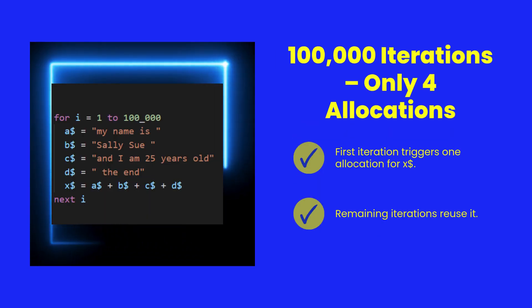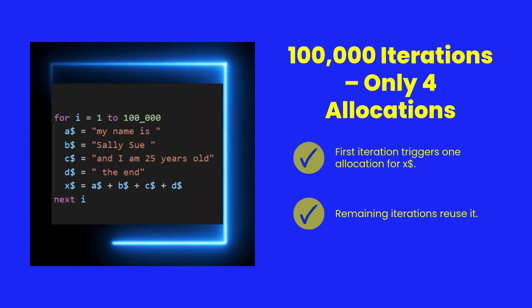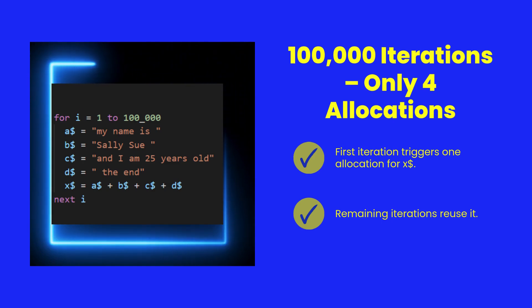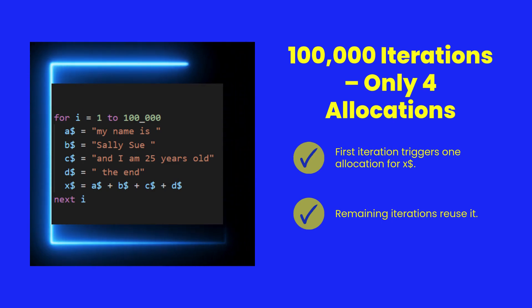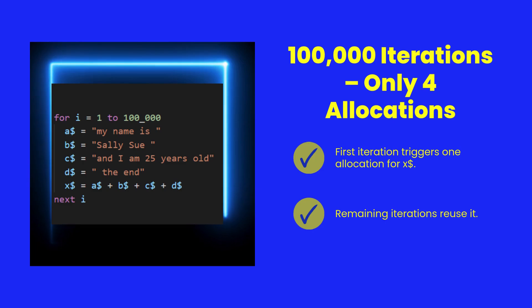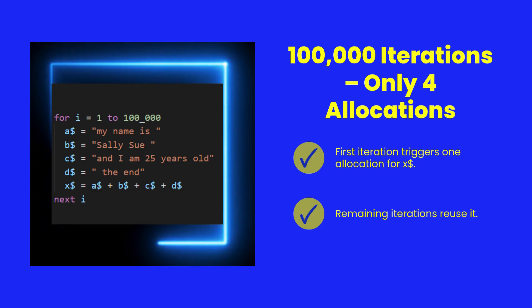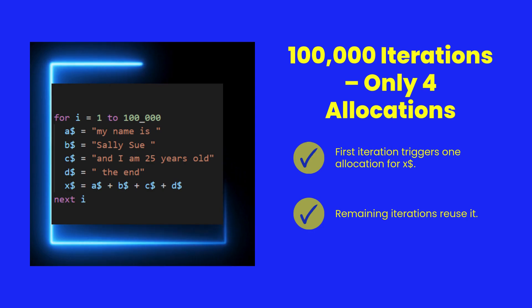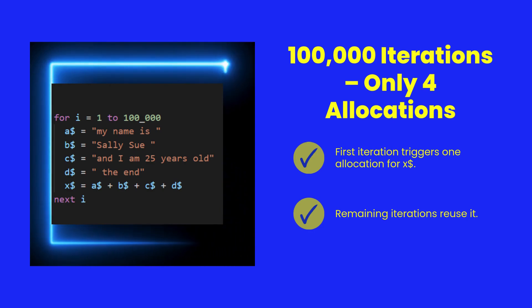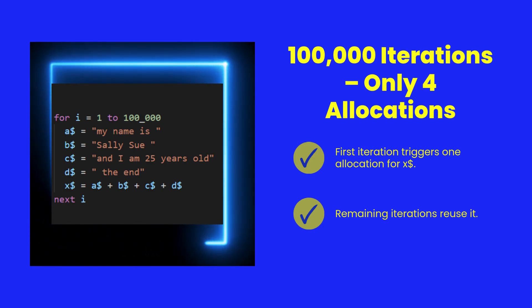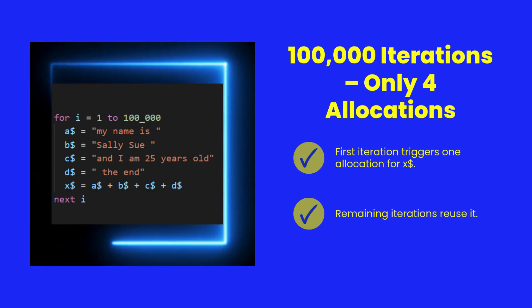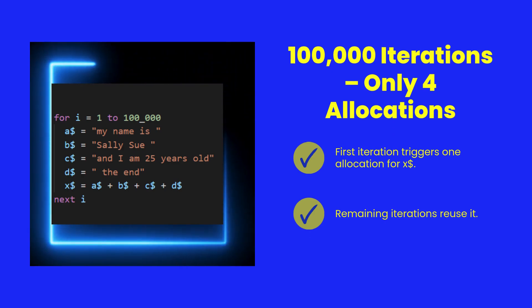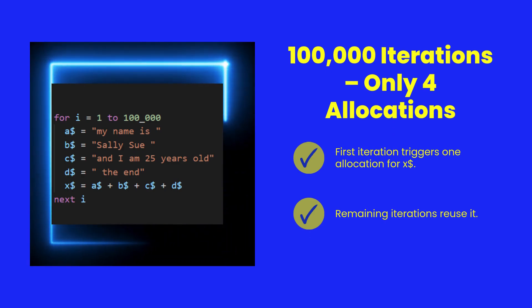This loop runs 100,000 times. Normally, that would mean 100,000 string concatenations and 100,000 memory allocations. But not in ShearPower. SPVM sees that the inputs haven't changed, so after the first iteration, it skips all the rest. The result: just four allocations.